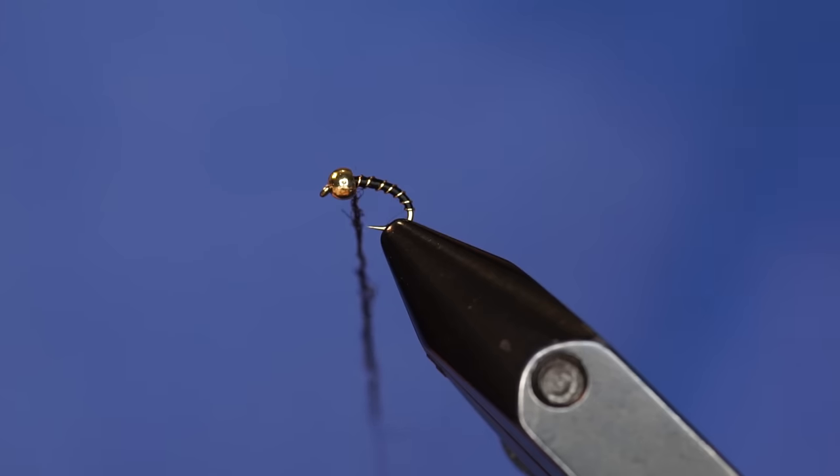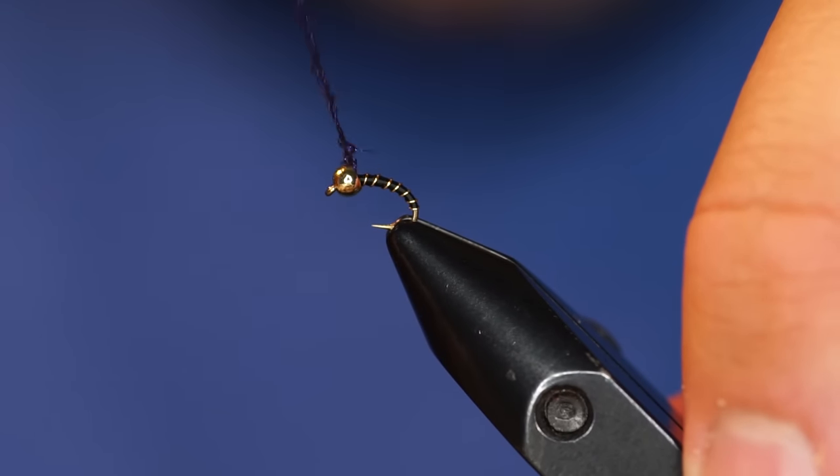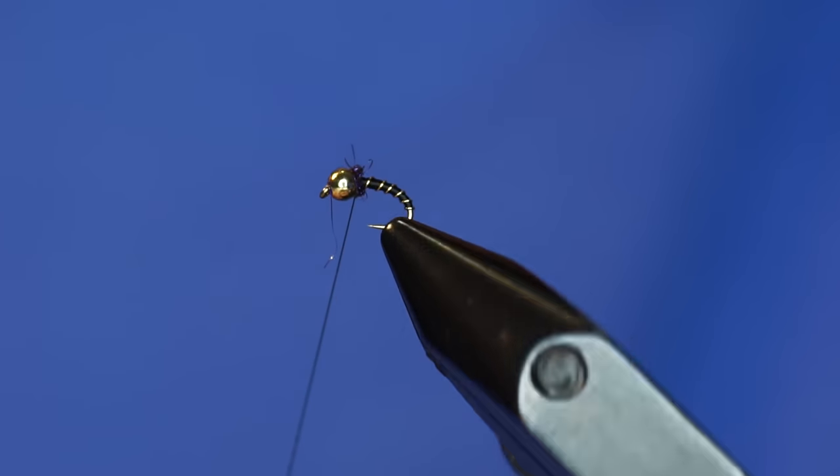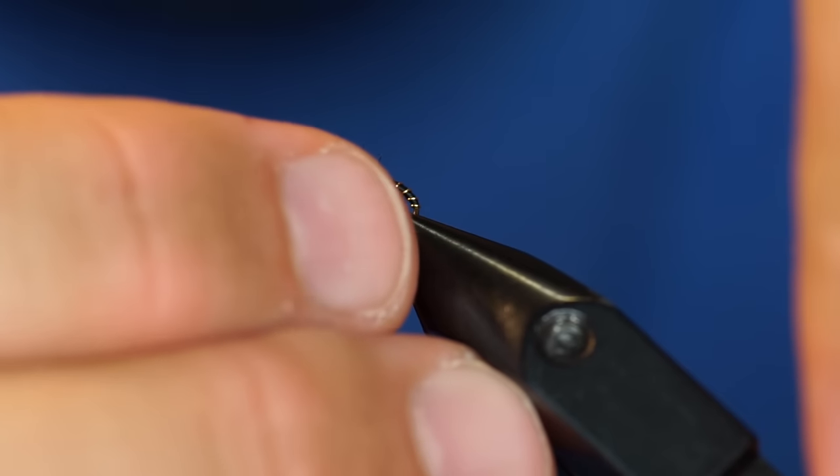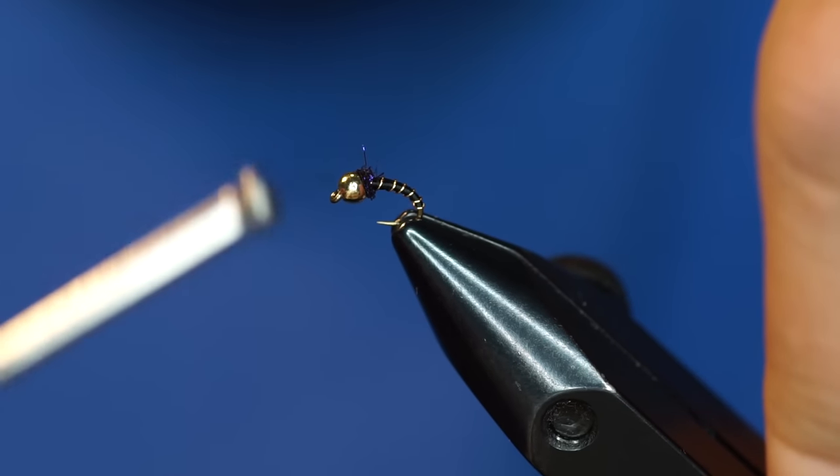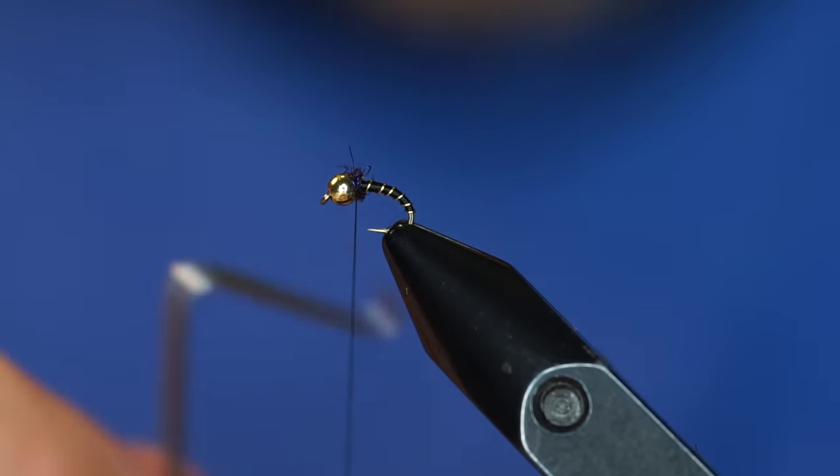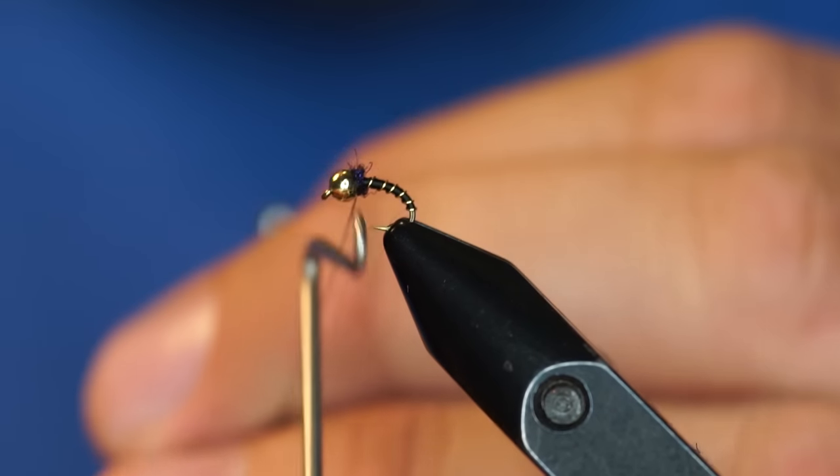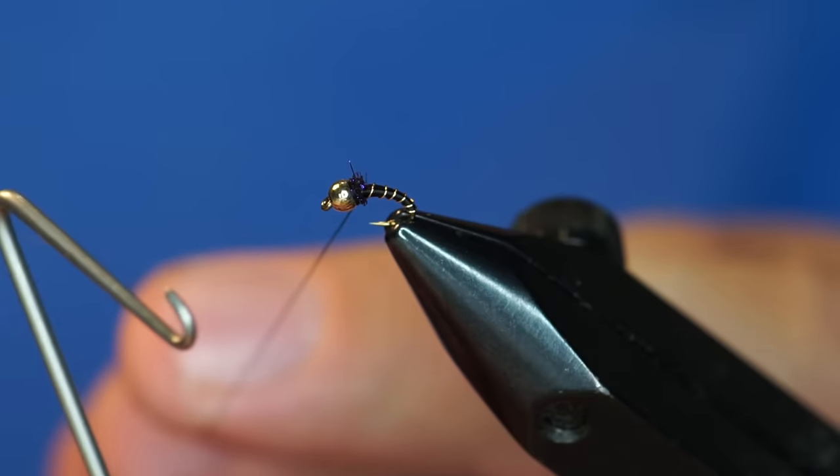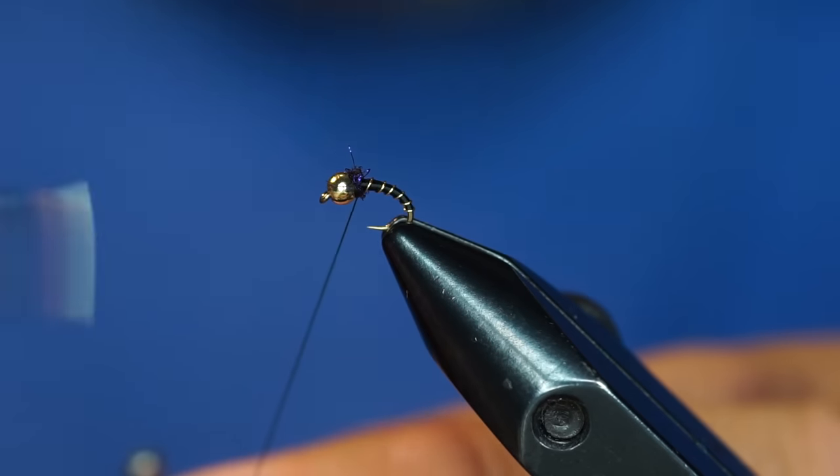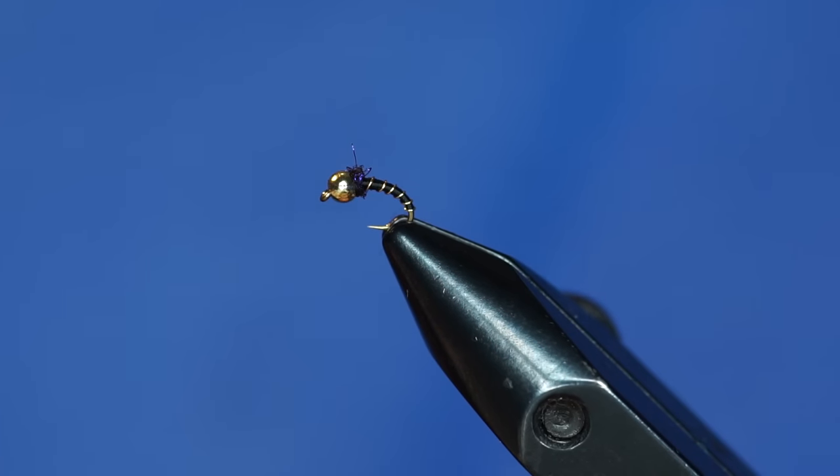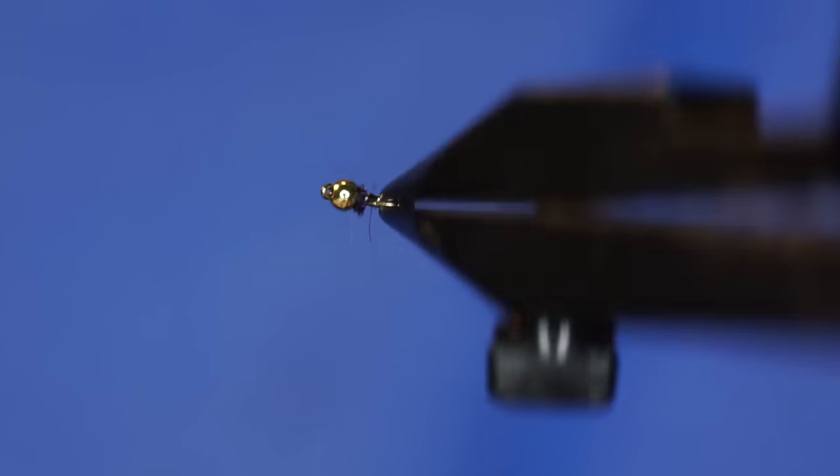As I wrap this on the Zebra Midge, it should push it kind of behind that bead to seat it in place. That's about as much dubbing as I'm going to put on this fly. Now I'm just going to whip finish it.